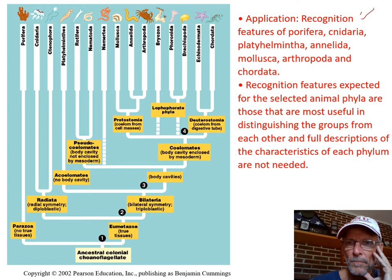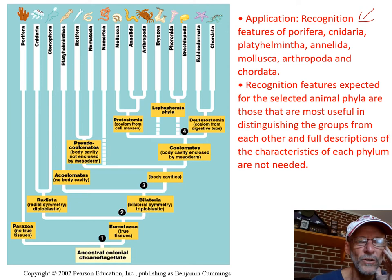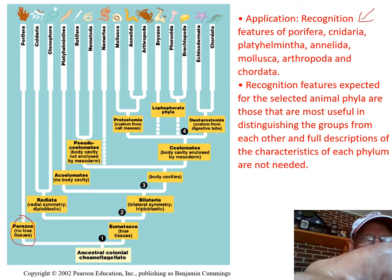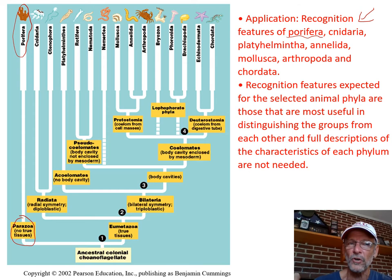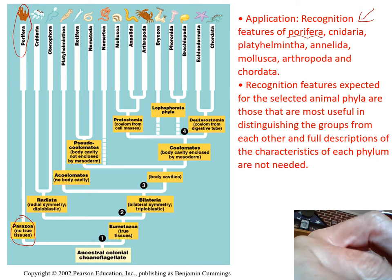So here's the big phylogenetic tree. These are the phyla they want you to recognize, and then also the classes that will come later. Porifera — no true tissues. These don't have what we call true tissues like muscle tissue and nerve tissue. Porifera are the sponges. They are animals even though they look much more like plants — rooted to the ground, all in the ocean, with branches like plants. They don't have eyes or fingers, but they are animals.